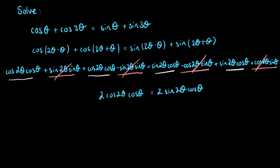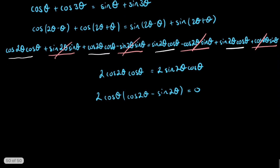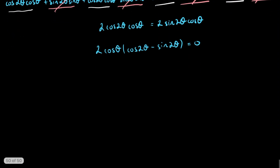Now we can move everything to the left-hand side and factorize. Factorizing 2cosθ out of both terms, we're left with cos(2θ) take sin(2θ) in the brackets, and this is all equal to zero. Now we have solutions: we're going to have solutions for cosθ equal to zero, and cos(2θ) take sin(2θ) equal to zero.